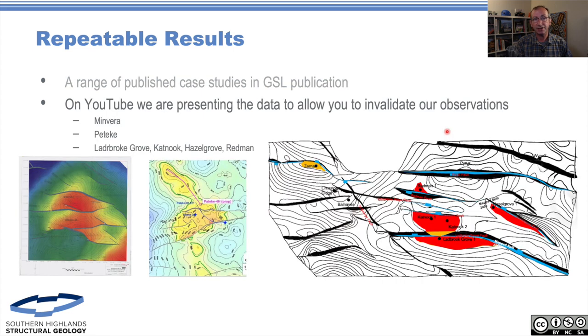That's why we're going to keep doing these videos. In the last set of videos we produced examples for Minerva, Pateke, Lightbrook Grove, Catnook, Hazel Grove, and Redmond Fields. We're going to keep producing these videos. We will make mistakes — that's the whole idea about science: we actually present our data and our assertions so we can all check on them. I hope you enjoyed that talk about Coro Energy's Mako field. Next week we're going to be putting together some case studies for compressional faults, in particular having a look at the Elephant field and Coosiana. Hope you all have fun and we'll see you soon.